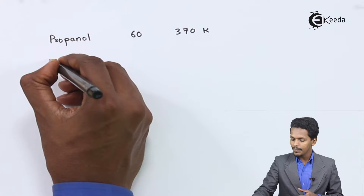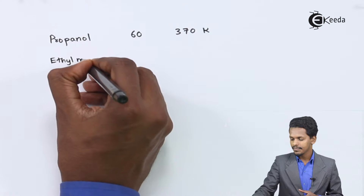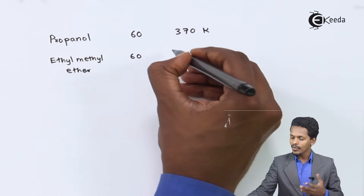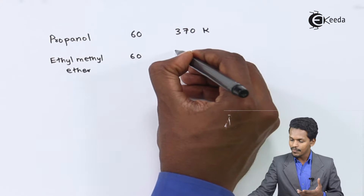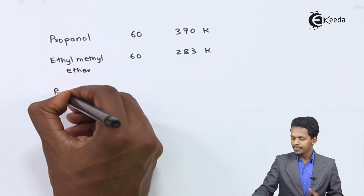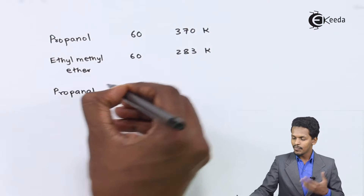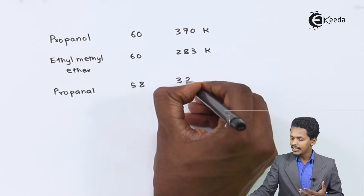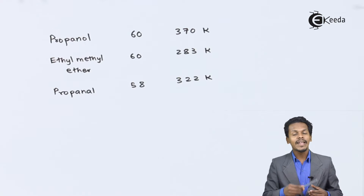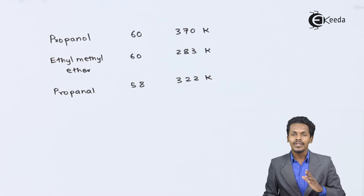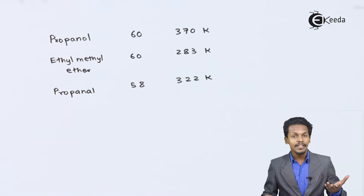Comparing with ethyl methyl ether, which also has a molecular mass of 60, its boiling point is only 283 Kelvin. And propanal, with a molecular mass of 58 (almost 60), has a boiling point of 322 Kelvin. This clearly indicates that alcohols have a higher boiling point compared to ethers and aldehydes — and this also applies to alkyl halides and alkanes.